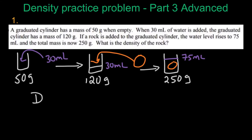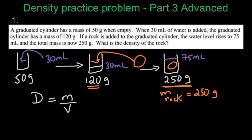Density equals mass over volume, so we need to find the mass of the rock and the volume of the rock. The mass of the rock is 250 grams take away 120 grams, just to find the mass of the rock itself. The answer is 130 grams.